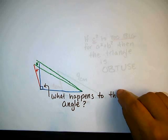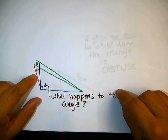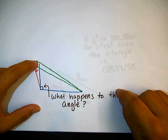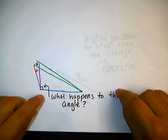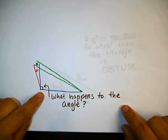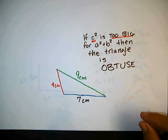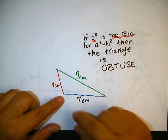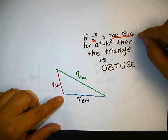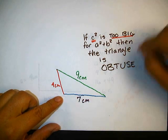Well, I could tilt out the 4 cm side, and I could tilt down the 9 cm side. What happens to the angle when I do that? Well, I went from a 90 degree angle to a larger angle, so my triangle's obtuse. So if C squared is too big, then the triangle's obtuse.